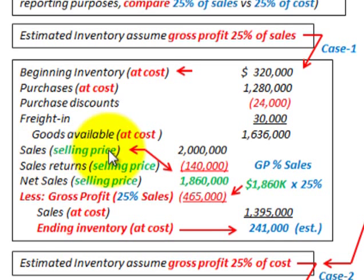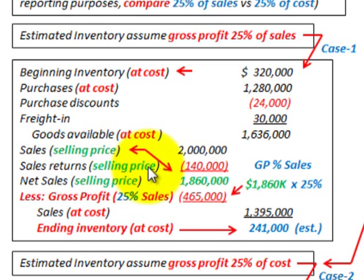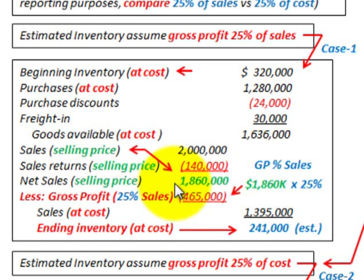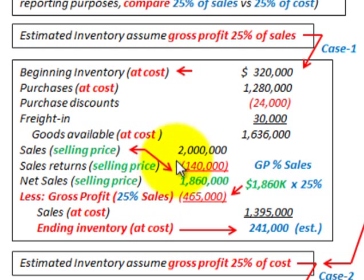Our sales are listed at their selling price. We subtract sales returns, also at the selling price, and our net sales are the difference — at the selling price, that's $1,860,000.